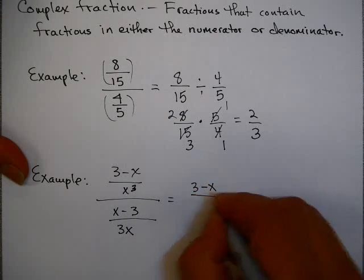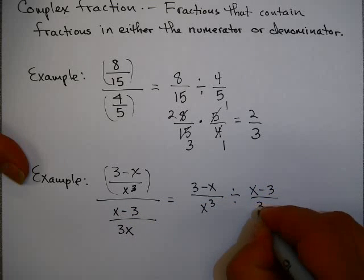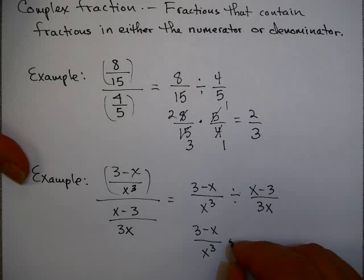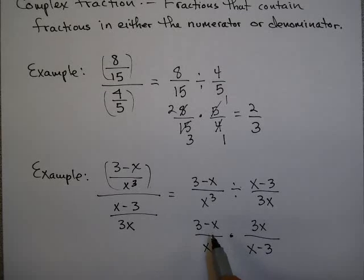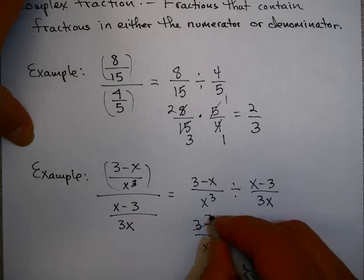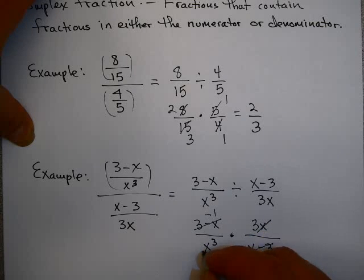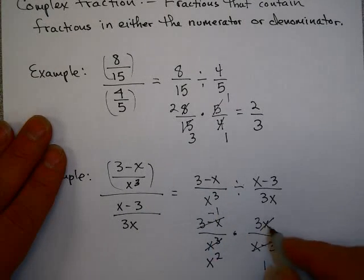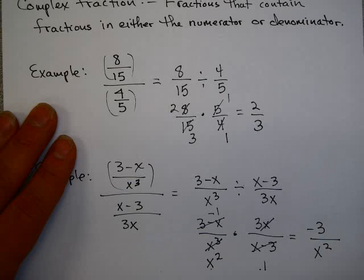You could write the same thing: here's the numerator, divided by the denominator. Change division to multiplication. Be careful: 3 minus x and x minus 3 — that is negative 1. And here I have 3 times x and x times x times x, so one of these x's will divide into x cubed and give me x squared. So I have negative 1 times 3, which is negative 3, and x squared times 1, which is x squared. That is my answer.